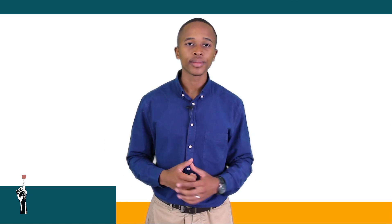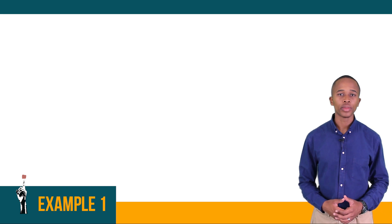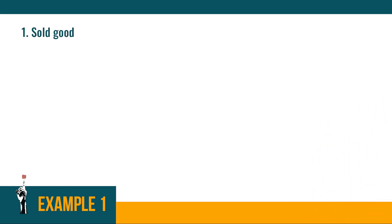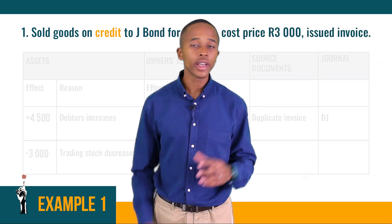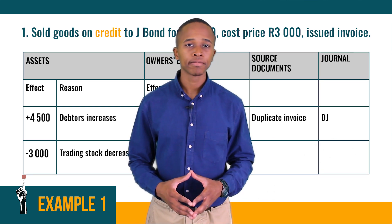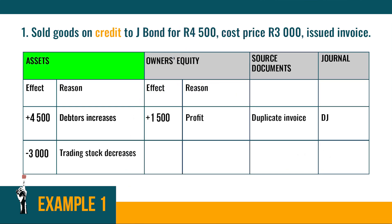Now that we've got all the theory covered, let's look at the actual accounting part and see what a credit transaction will look like and how it will influence the accounting equation. Example one: goods were sold on credit to J Bond for R4,500 — cost price R3,000 — and an invoice was issued.